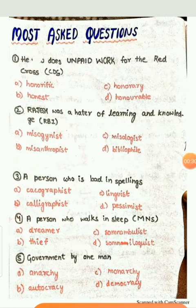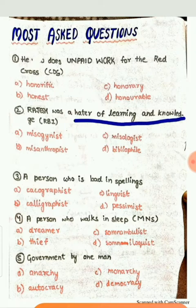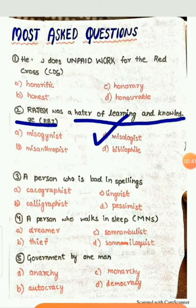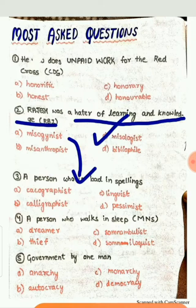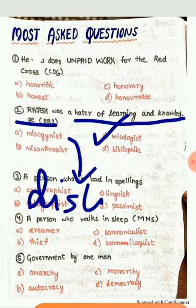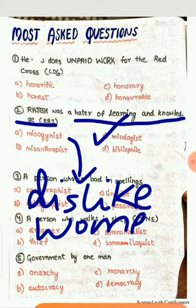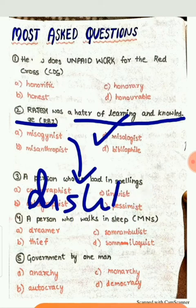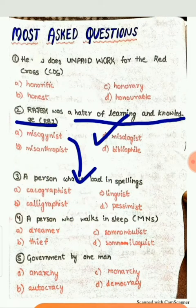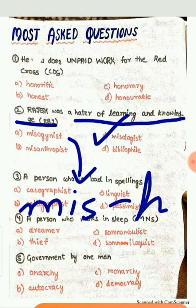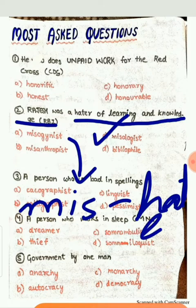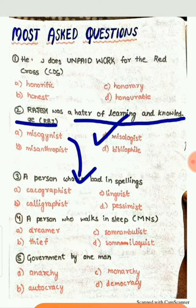In this question you need the one-word substitute for 'hater of learning and knowledge.' The correct answer is C. Misologist. Misogynist means a person who dislikes or hates women. If a word contains 'mis-', most of the time it means hate or dislike. Misanthropist: 'mis' means dislike and 'anthrop' means human — so a person who dislikes humans.